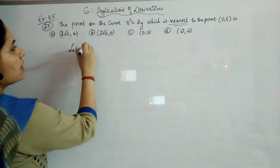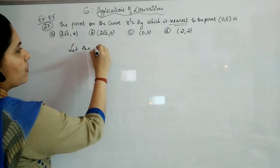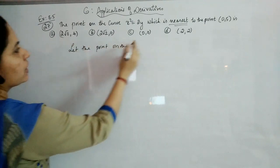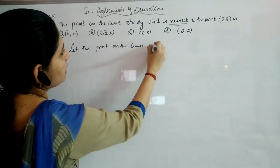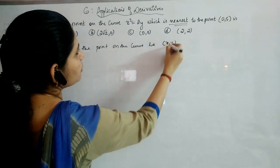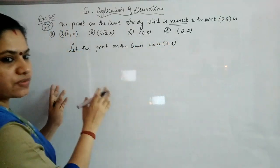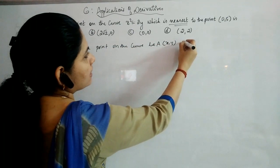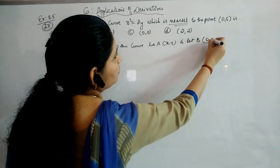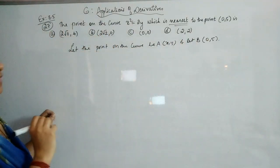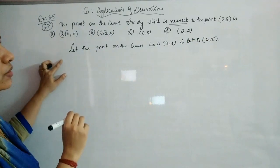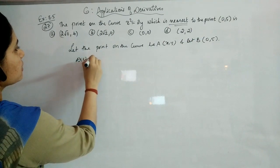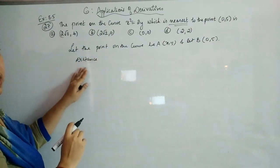First, take the point as (x, y). Let any point on the curve be A(x, y) and let B = (0, 5). What we need to find is the distance AB, and we have to minimize this distance.